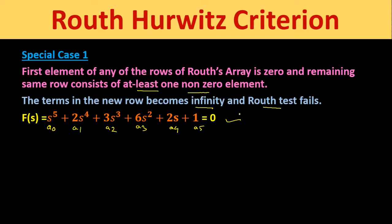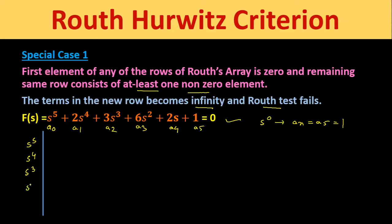In the Routh array table, the last row will be s⁰ and the first element of the last row will be equal to aₙ. Here since aₙ = a₅, the first element of the last row is equal to 1. We will now construct the Routh array. The rows go from s⁵ down to s⁰, so the first element of the last row equals 1.